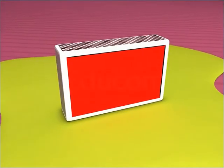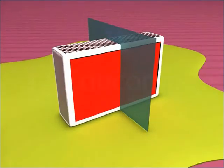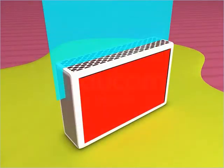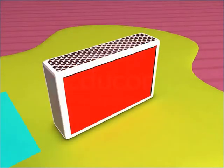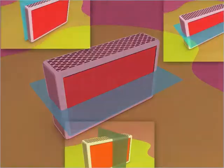This is a matchbox. It shows symmetry about this plane, this plane, and this plane. Thus, it has three planes of symmetry.